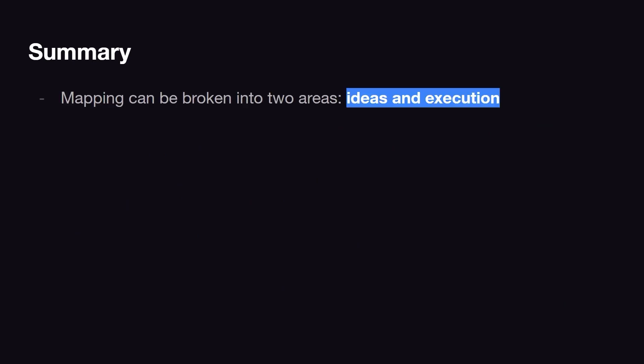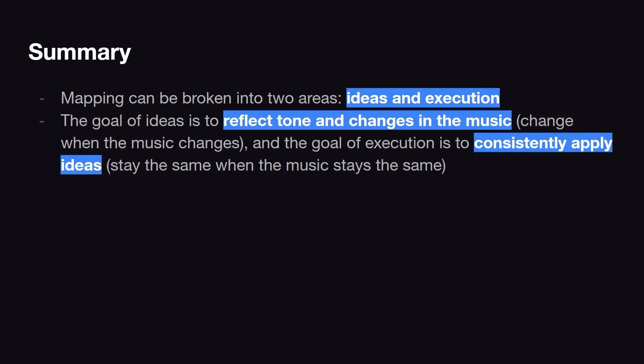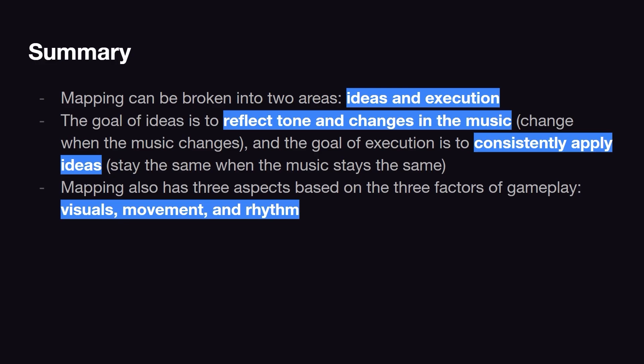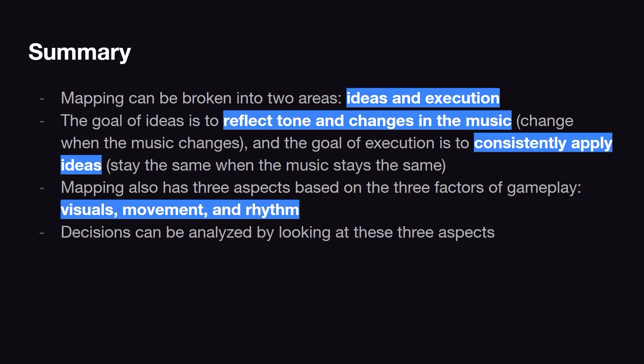In summary, mapping can be broken into two areas — ideas and execution. The goal of ideas is to reflect the tone and changes of the music, and the goal of execution is to consistently apply ideas. Mapping also has three aspects that make up your map: visuals, movement, and rhythm. Ideas and execution can be analyzed by looking at these three aspects. Now I'm going to hop over to the editor and show you more about how you can apply these ideas.